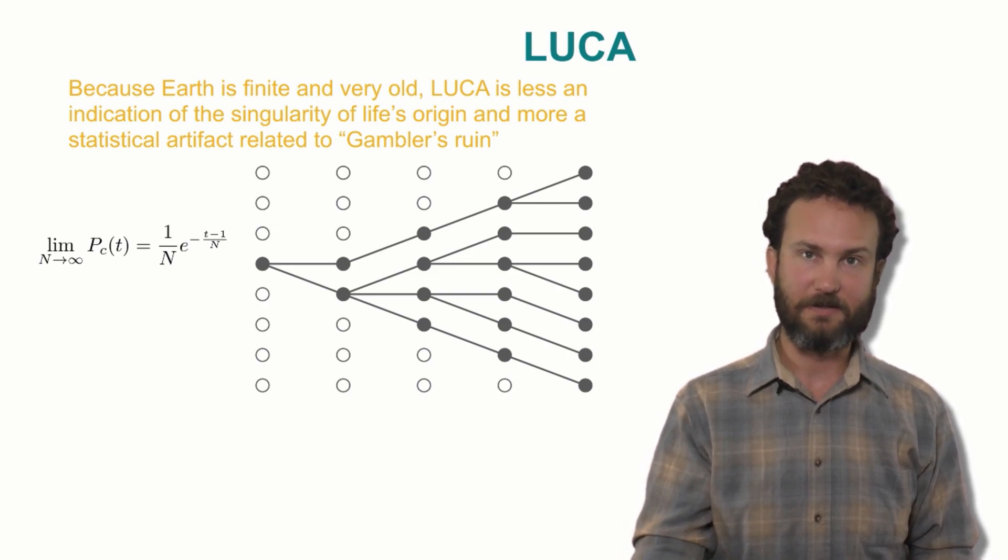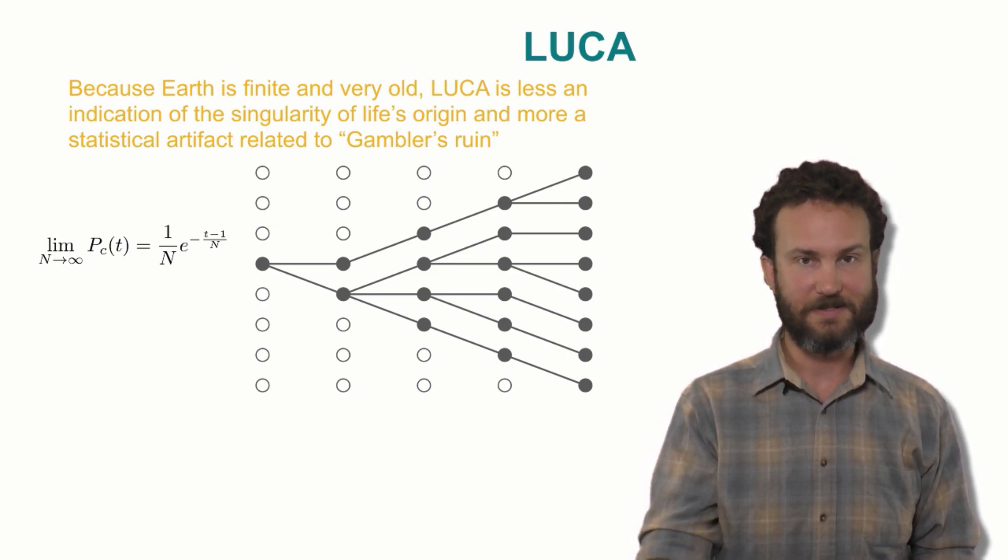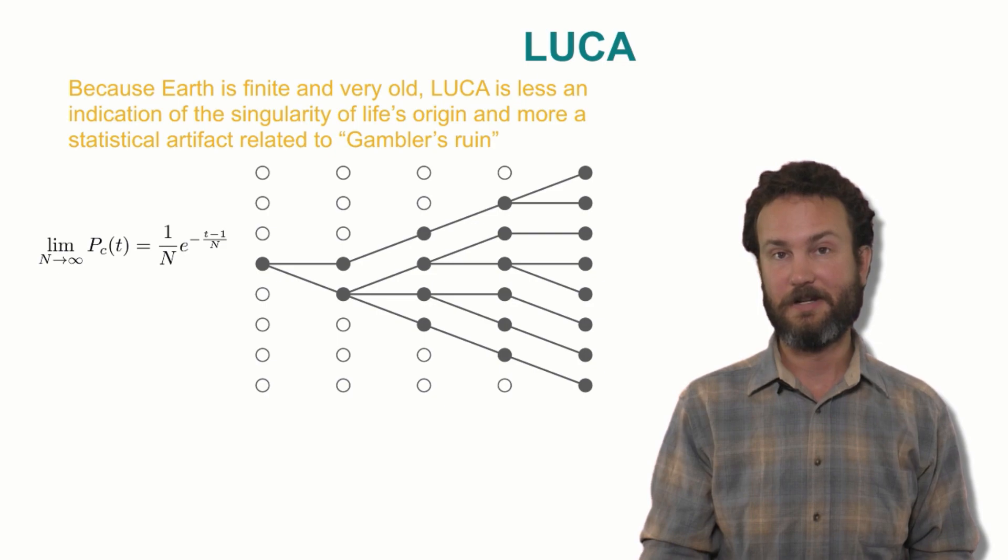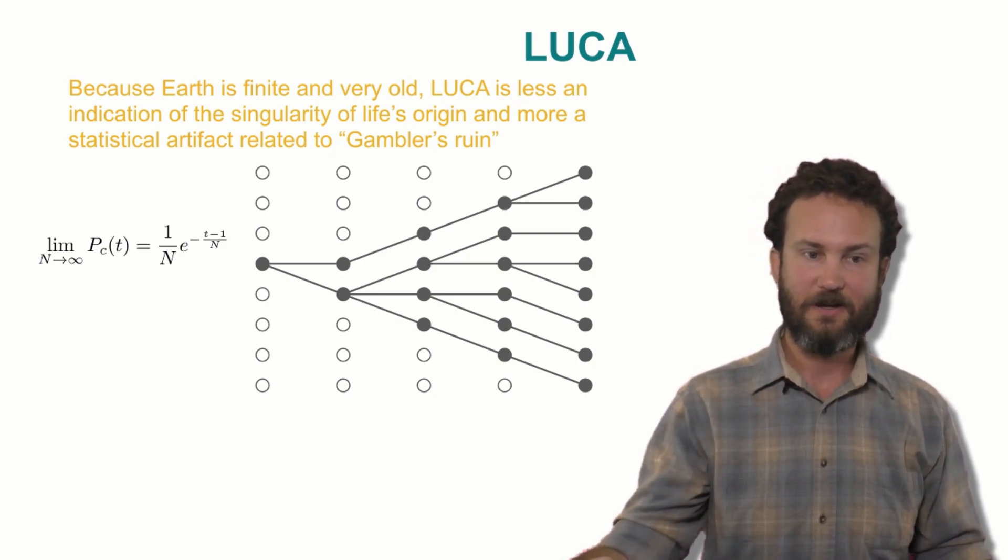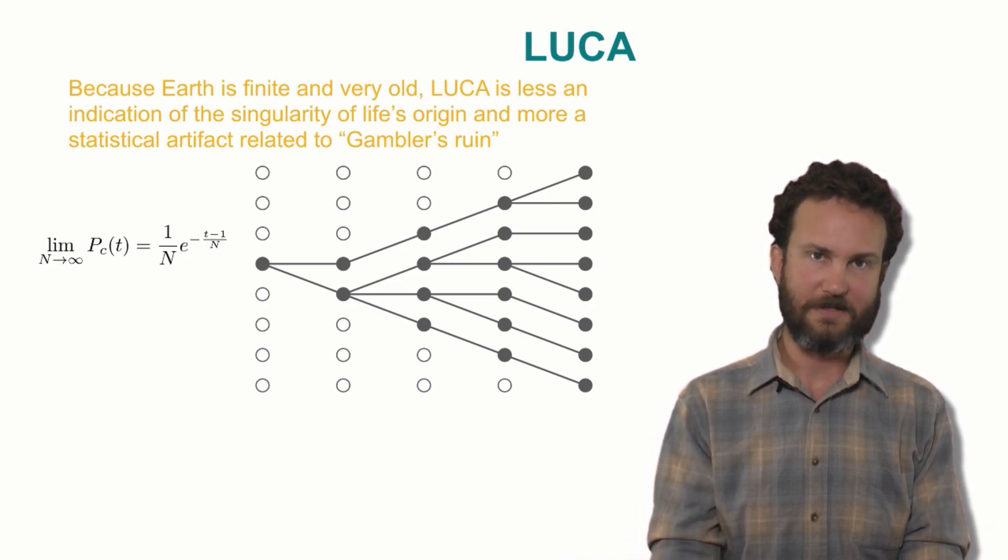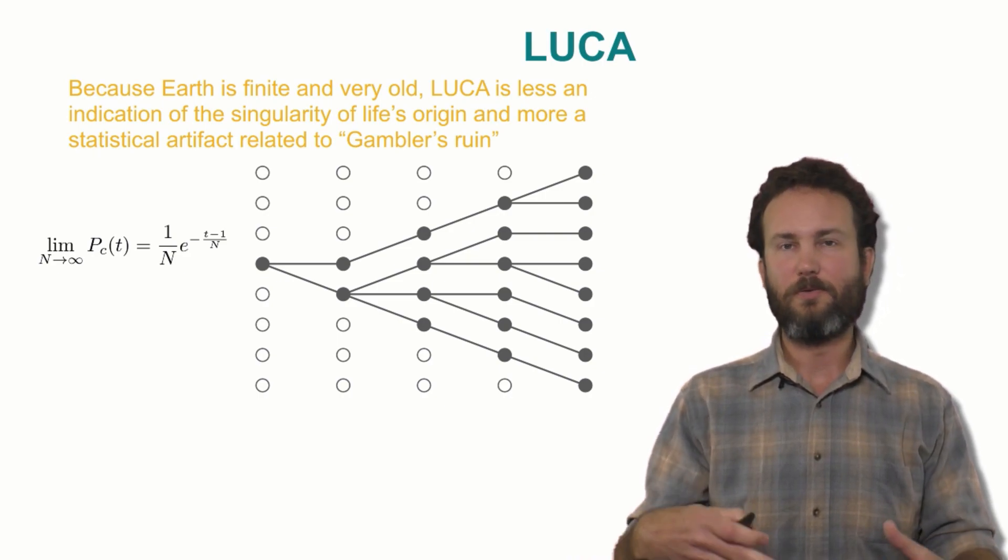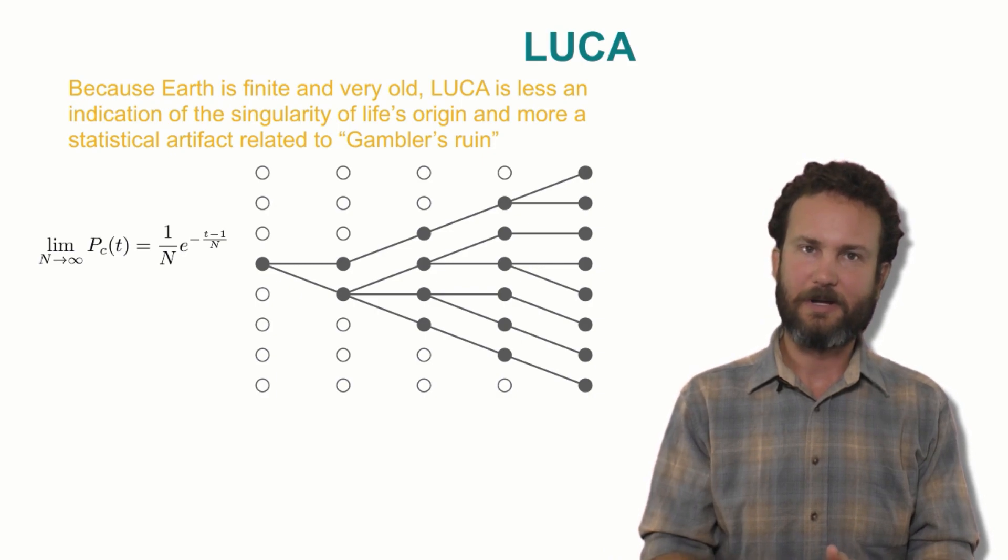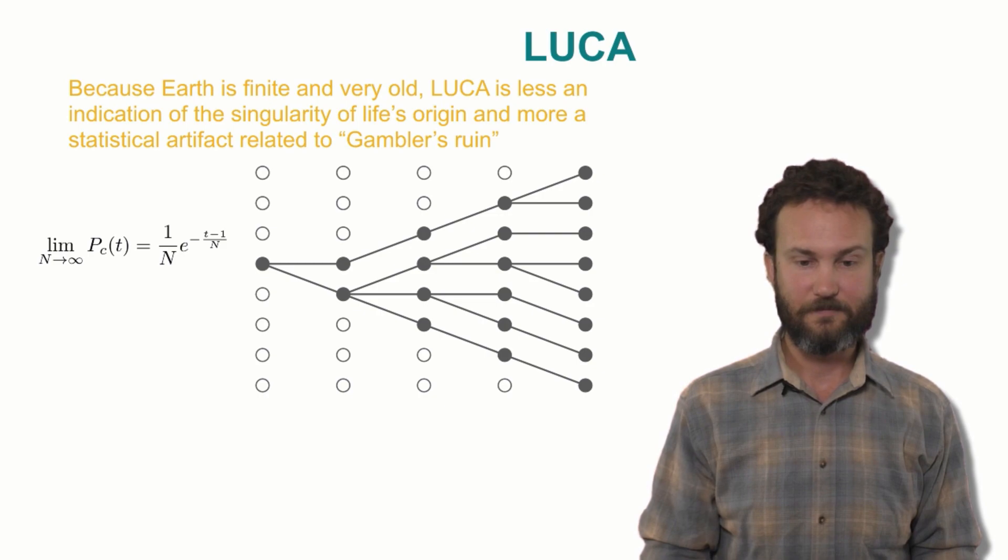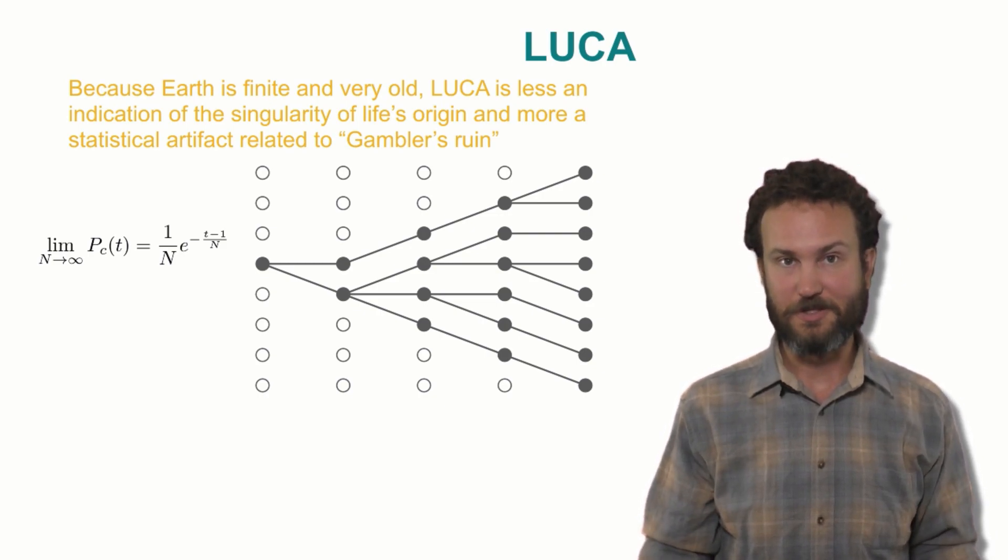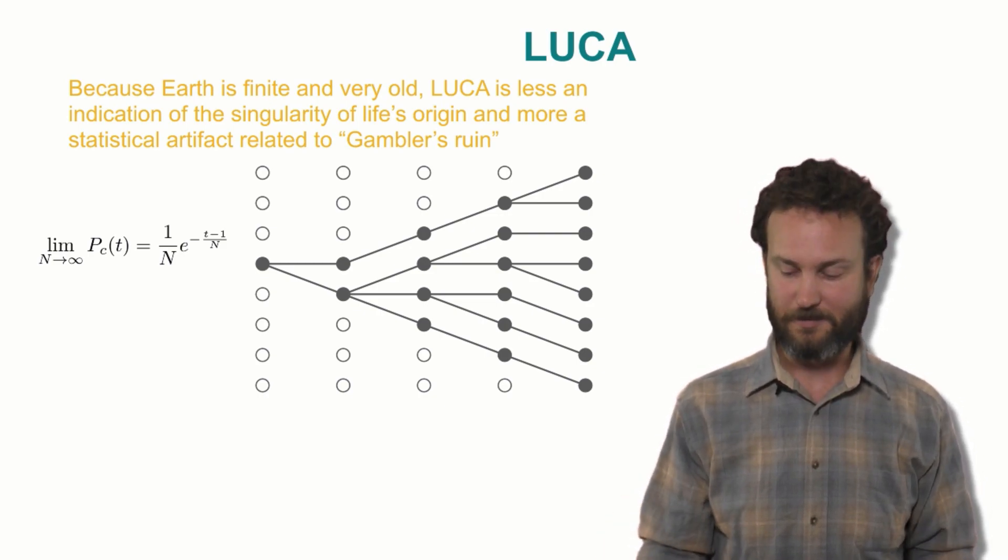This is actually a very well-known phenomenon in probability theory called gambler's ruin, which just means if you keep playing against the casino, if you keep playing against the house, eventually you'll lose. And in our case, if you keep playing the game of finding your ancestor, eventually you'll all collapse to one ancestor. So the fact of one last universal common ancestor is not necessarily evidence for one origin of life, although it could be. We just can't necessarily conclude from the data at hand.